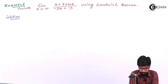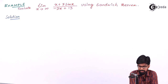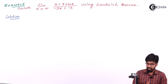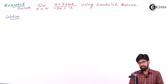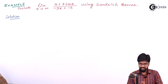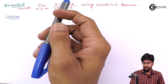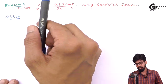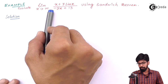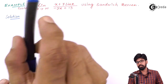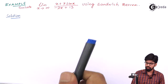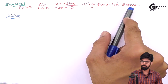Let us consider an example and understand the Sandwich Theorem in a better way. The example is: evaluate the limit as x approaches infinity of (x + 7 sin x) / (-2x + 13). To solve this question we have to use the Sandwich Theorem.